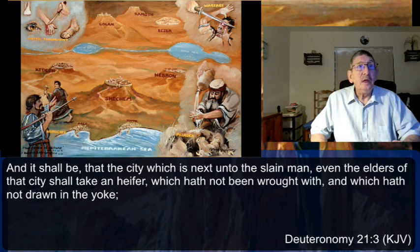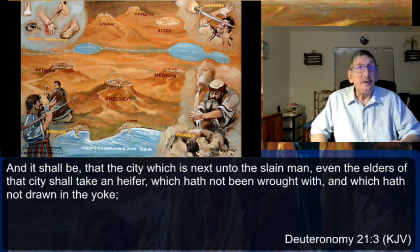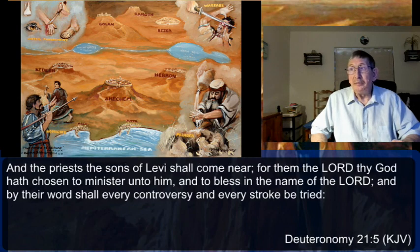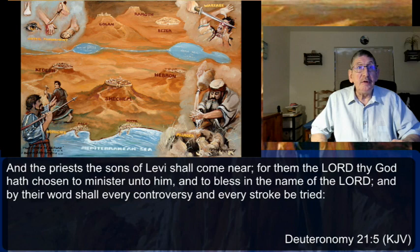The city which is next unto the slain man — the elders of that city shall take a heifer which hath not been wrought with and which hath not drawn in a yoke, so it has never done any work before. The elders shall bring down the heifer unto a rough valley which is neither eared nor sown and shall strike off the heifer's neck there. The priests and sons of Levi shall come near, for them the Lord thy God has chosen to minister unto him, and by their word shall every controversy and every stroke be tried.